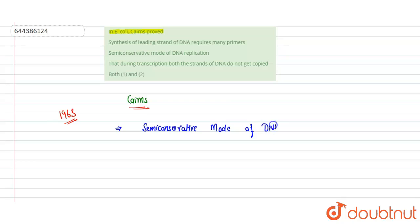Previously, before Cairns, two scientists had already proved the semi-conservative mode of replication. That was proved by two other scientists - Meselson and Stahl. For that, they also got the Nobel Prize for their discovery.